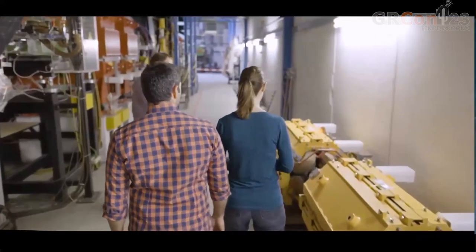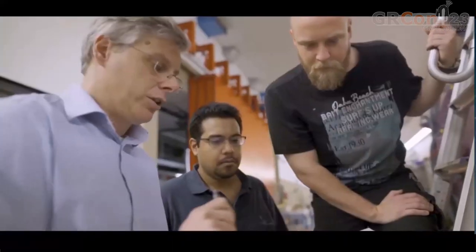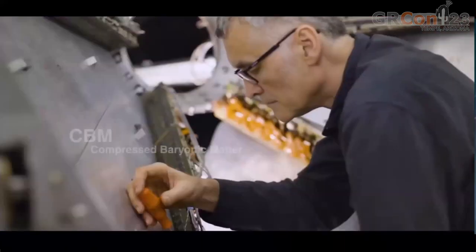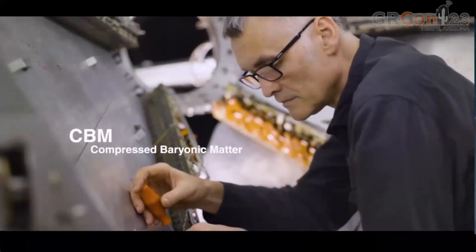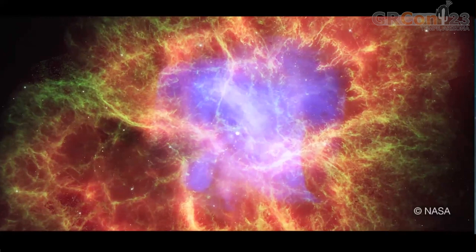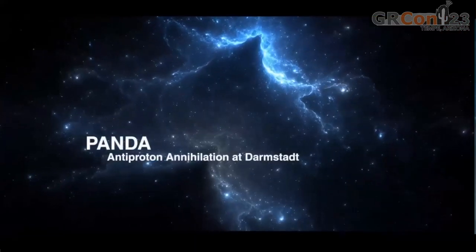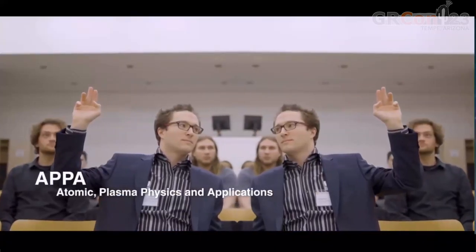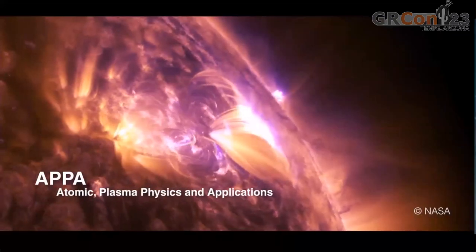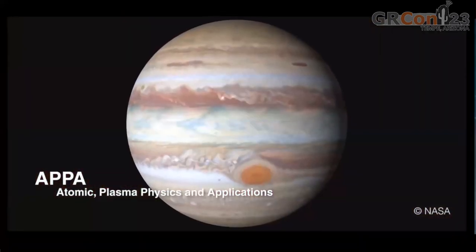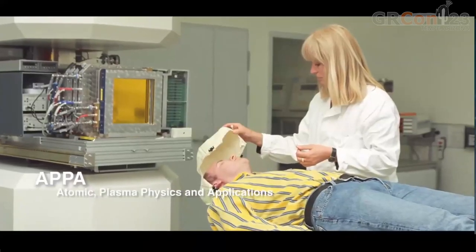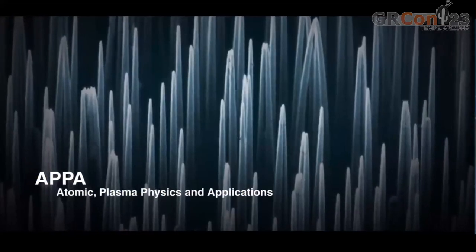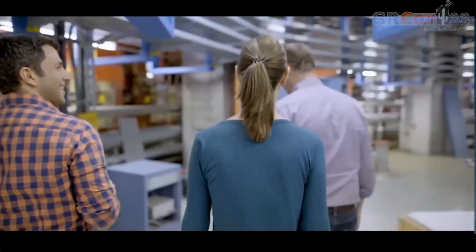FAIR is the only facility of its kind in the world. It consists of a ring accelerator with a circumference of 1,100 meters and a complex system of storage rings and experiments. FAIR will produce beams of ions and antiprotons of the highest quality and intensity. Scientists at FAIR have organized themselves into four experiment collaborations. They want to find answers to questions like: how are heavy chemical elements created in stars and stellar explosions? In what form does matter exist in neutron stars? How can we use particles to heal diseases? And how can we protect astronauts against cosmic radiation?